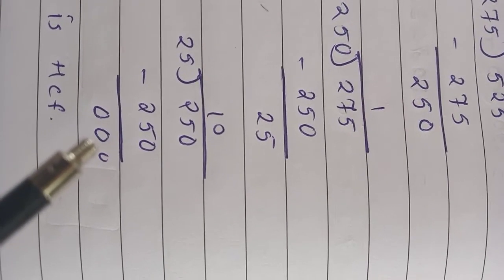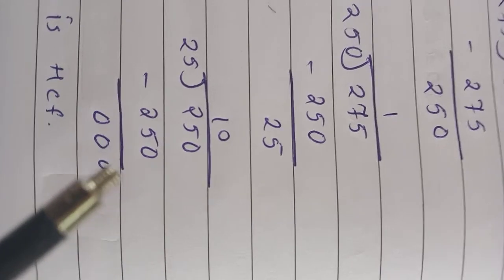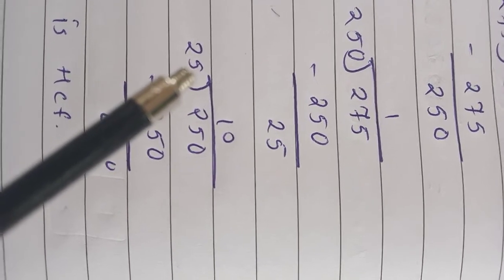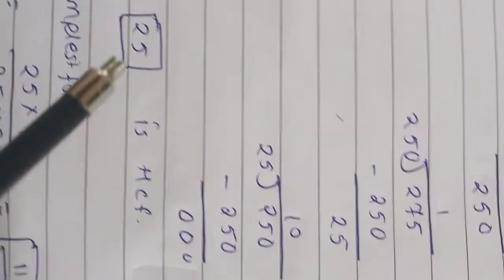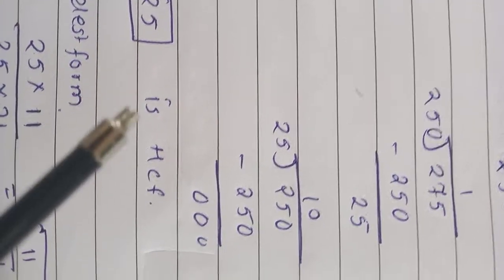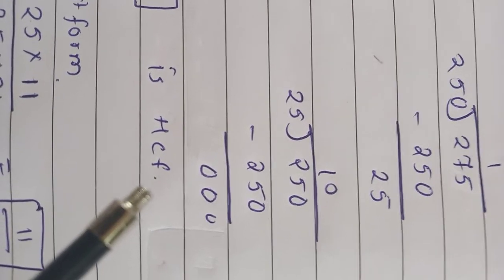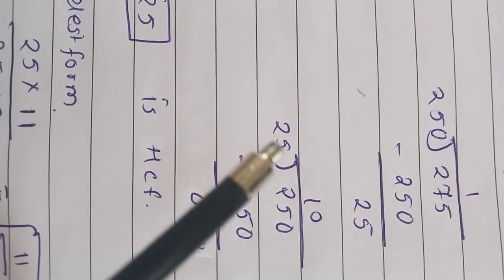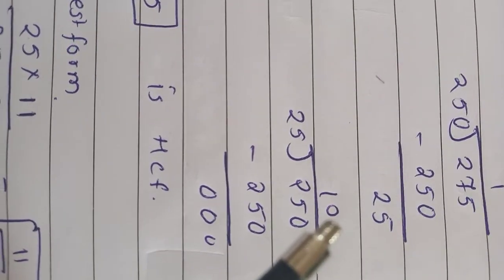So 250 divided by 25 we get 25 tens are 250. 0 is remainder. When the remainder is 0, so our HCF process is completed. So this divisor that is 25 is the HCF of given two numbers. So 25 is the highest common factor. So divisor is the answer, not the quotient.